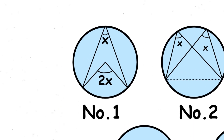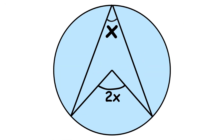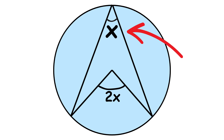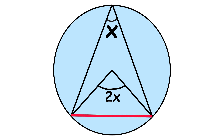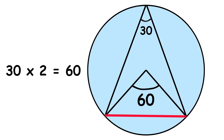The first circle theorem is the angle at the center theorem. The angle at the center of a circle is always twice the angle at the circumference when they stand on the same arc. So if an inscribed angle is 30 degrees, the corresponding central angle will be 60 degrees.